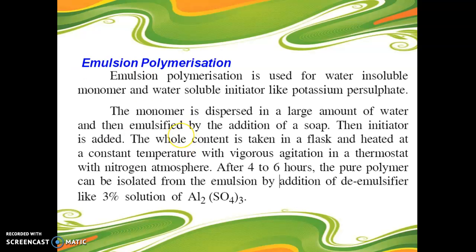The next type is emulsion polymerization. It is used for water insoluble monomers with a water soluble initiator like potassium persulfate. The monomer is dispersed in a large amount of water and emulsified by the addition of soap, then the initiator is added. The whole content is taken in a flask and heated at constant temperature with vigorous agitation in a thermostat under nitrogen atmosphere. After 4 to 6 hours, the pure polymer can be isolated from the emulsion by the addition of a de-emulsifier like aluminum sulfate.